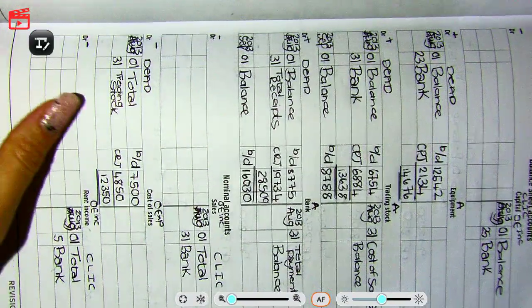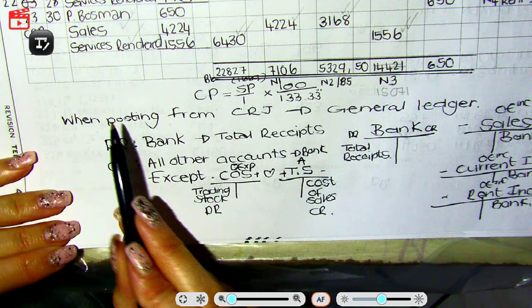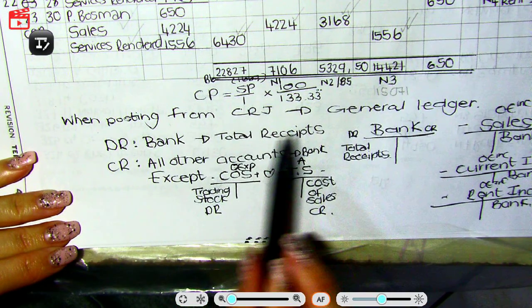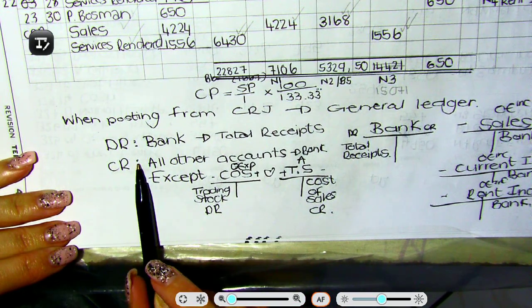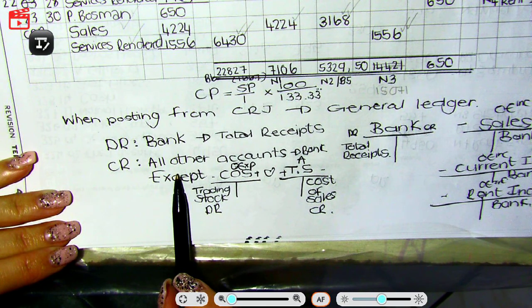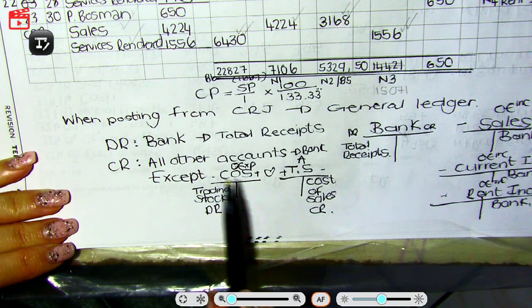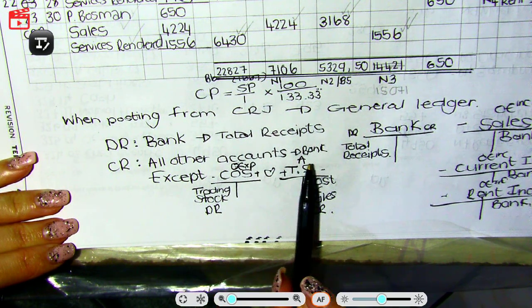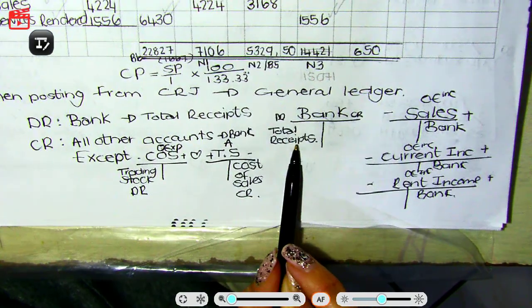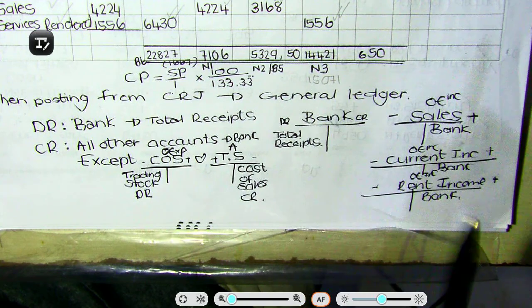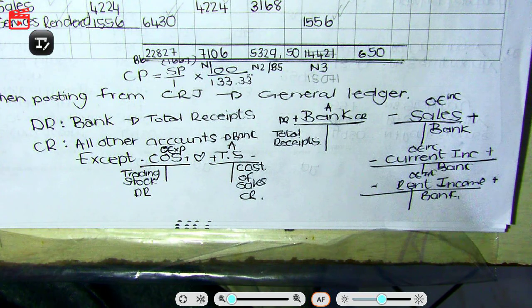When posting from the CRJ to the General Ledger, we debit bank with the word 'total receipts' and we credit all other accounts — except cost of sales and trading stock, because these two are married to one another. We will credit all other accounts with the word 'bank' except for these two. Bank will be debited with the word 'total receipts' because bank is an asset and it is increasing — I am receiving more money, so there's my debit.